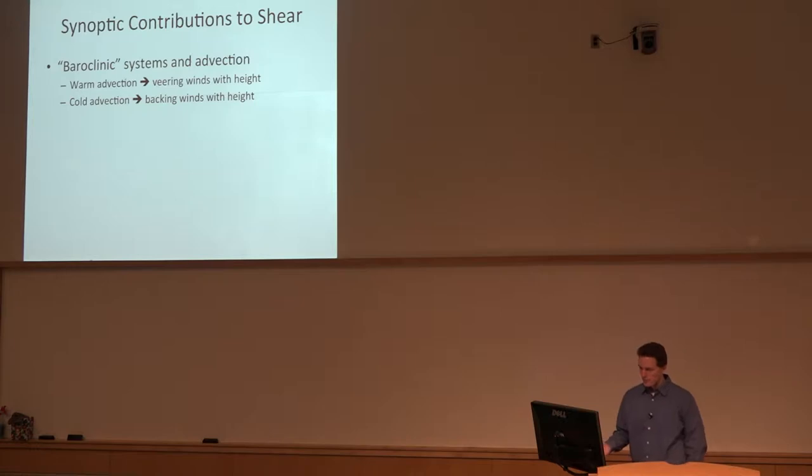So in this case, warm advection, through a little bit of hand waving, we get to veering winds with height. It's a thermal wind argument, and the point is a veering wind with height gives you a favorable wind shear profile for severe storms, and specifically supercells.